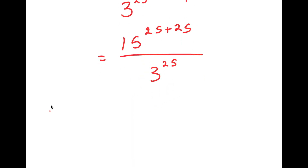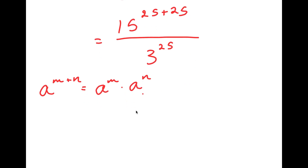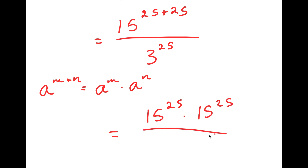The reason I did this is because now I can use the property a to the power of m plus n is equal to a to the power of m times a to the power of n. So in this case, 15 to the power of 25 plus 25 is going to equal 15 to the power of 25 times 15 to the power of 25, and I have this over 3 to the power of 25.